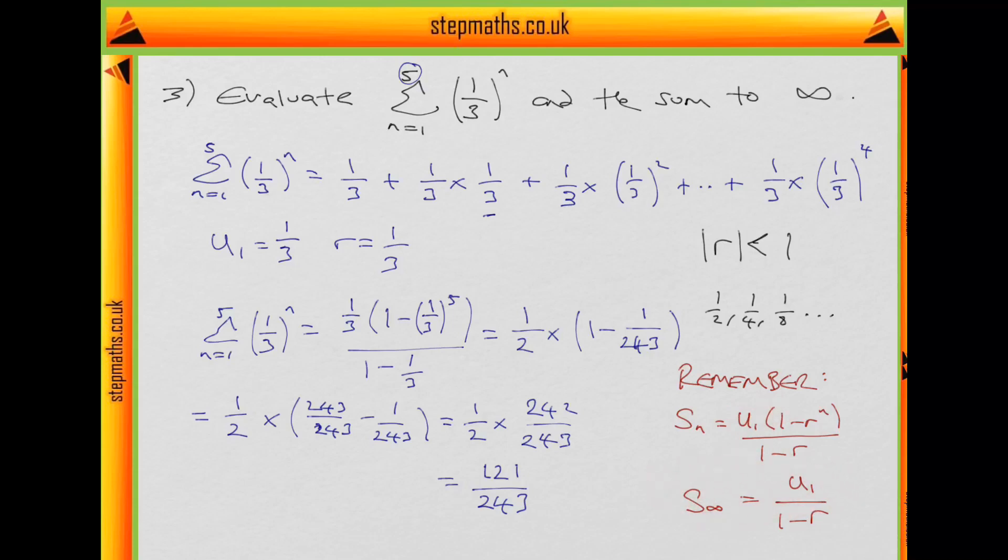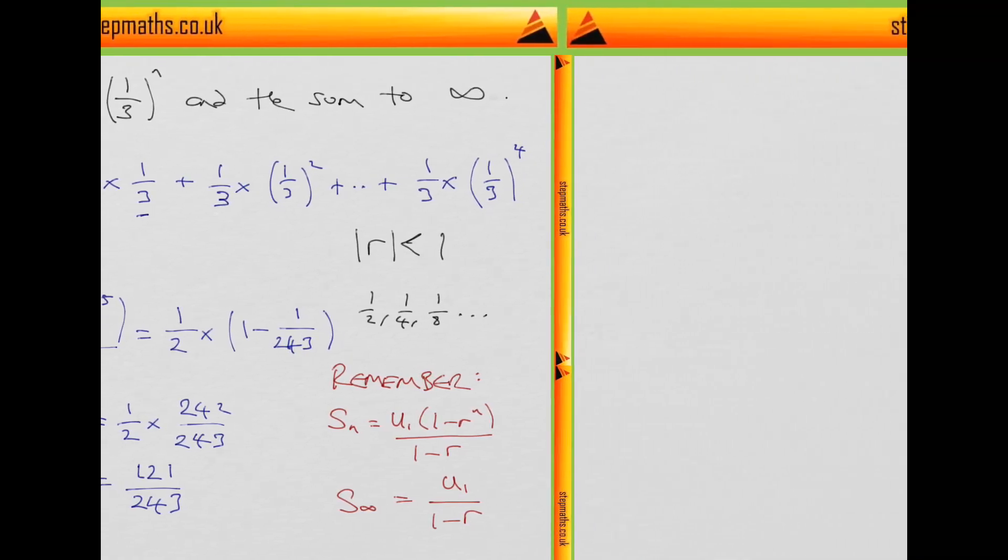So, let's plug our values into our formula for s-infinity. Quickly writing it out again, we have s-infinity equals u1 over 1 minus r. So, in this case, we have u1 equals r equals 1 third.